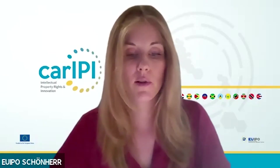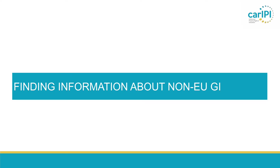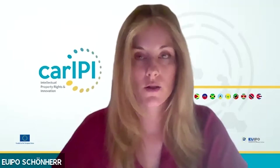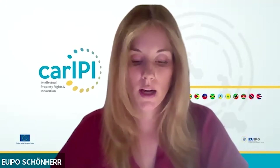First, I will briefly show you how to find information about non-EU GIs that are protected in the European Union. The European Commission's main portal or database for information about GIs is e-Ambrosia. On e-Ambrosia you will find detailed information about non-EU GIs that have been registered via direct applications.